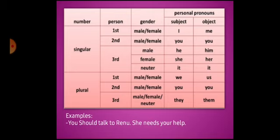Here is a table with numbers — singular and plural — and person: first, second, third. In singular first person, subject 'I' and object 'me'. Second person, male or female, subject 'you', object 'you'. Third person: male subject 'he', female 'she', neuter 'it'; object 'him', 'her', 'it'. In plural: first person 'we'/'us', second person 'you'/'you', third person 'they'/'them'. For example: You should talk to Renu. She needs your help. Here, both Renu and 'she' are singular number and feminine gender.